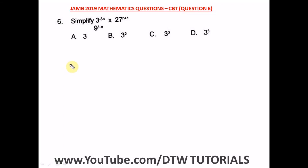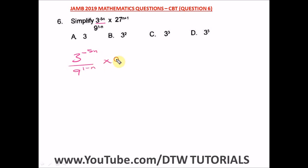Question six of the JAMB 2019 mathematics past question — that's your UTME CBT exam. It says simplify this. We have three raised to the power of four minus five n, divided by nine raised to the power one minus n, then multiplied by 27 raised to the power n plus one.